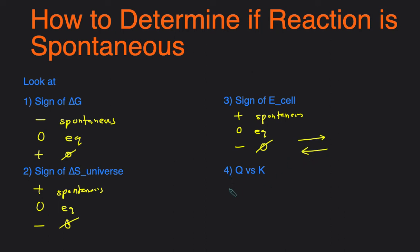And then lastly, we can take a look at Q versus K. So if Q is less than K, then that means that the reaction will proceed in the forward direction. So you can say that the forward reaction is spontaneous. If Q is equal to K, then that means that the reaction is at equilibrium. And then if Q is greater than K, then that means the reaction will go backwards. So the reverse direction will be spontaneous, but the forward reaction will not be spontaneous.